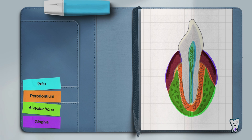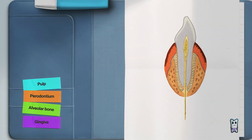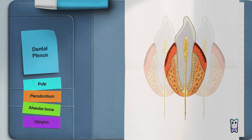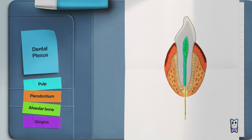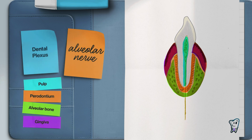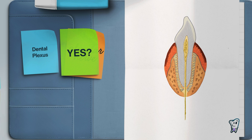We have all heard of the alveolar nerve. Whether in the upper or lower jaw, it forms an anatomical structure called the dental plexus. It resembles a net of nerve fibers and provides innervation to the pulp, periodontium, bone, and gingiva. So by anesthetizing this nerve, we can perform painless extraction — yes? No.